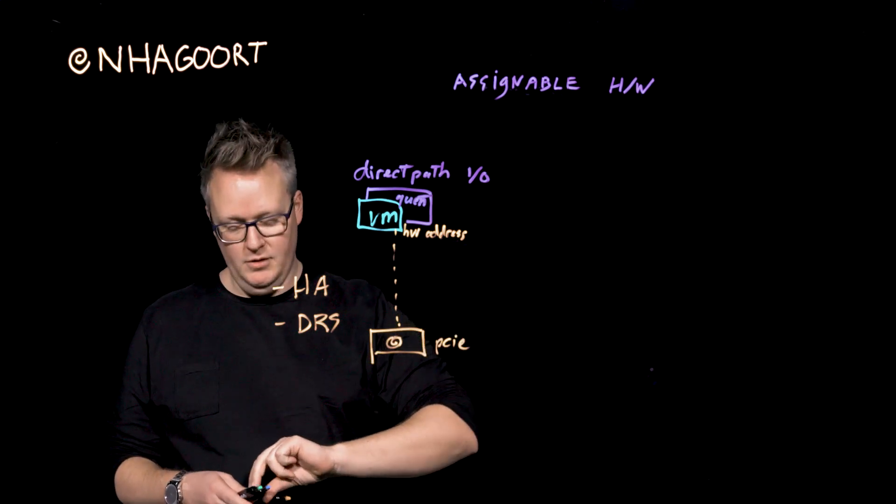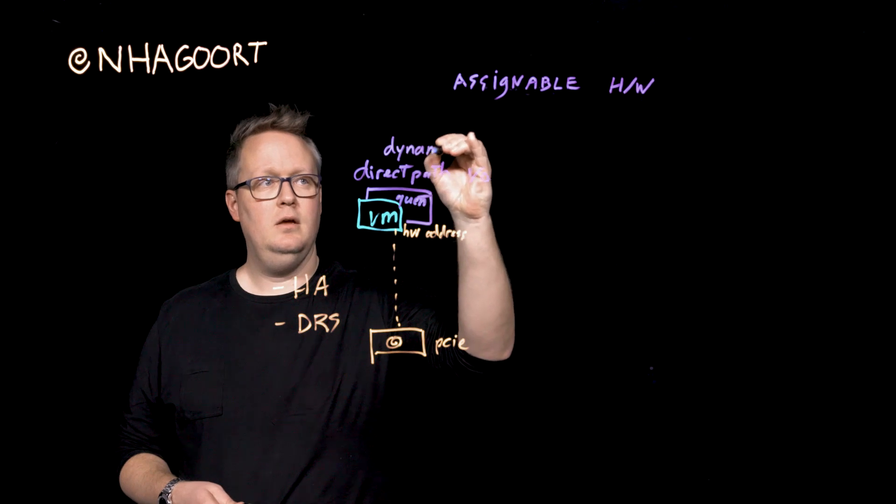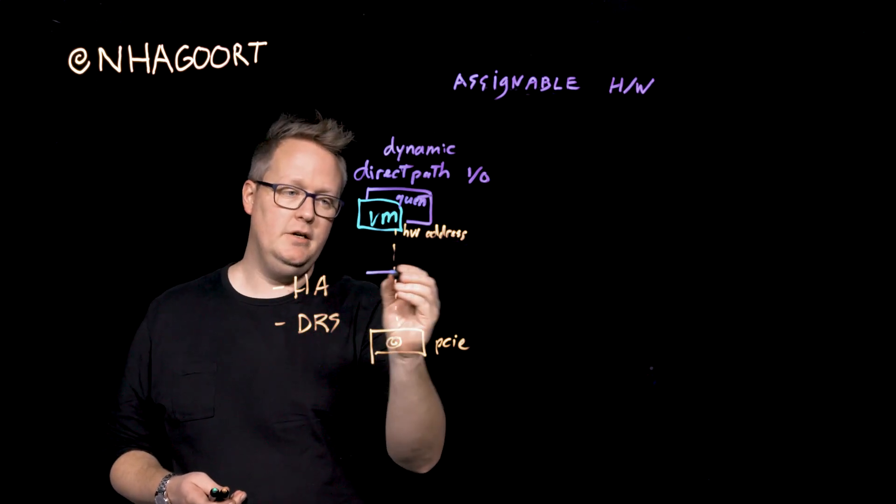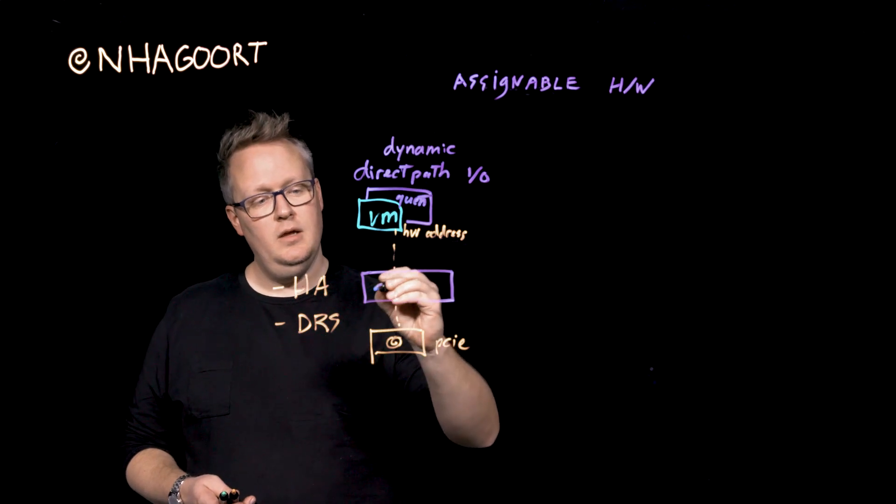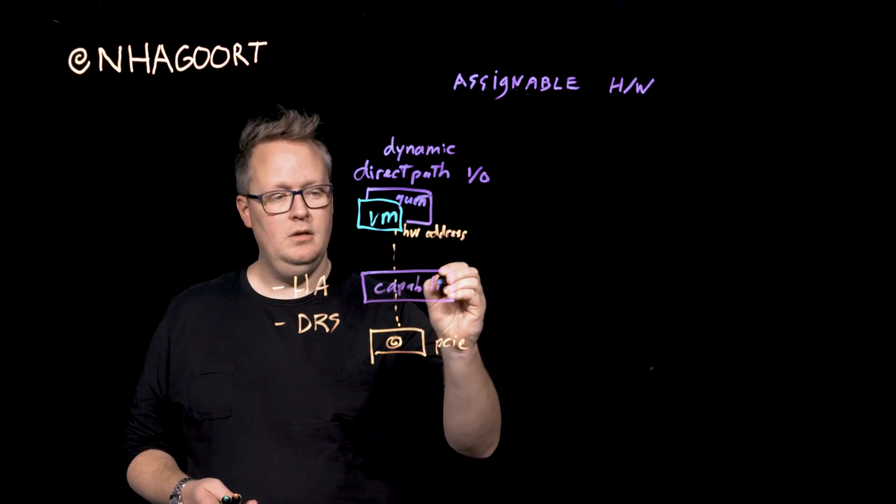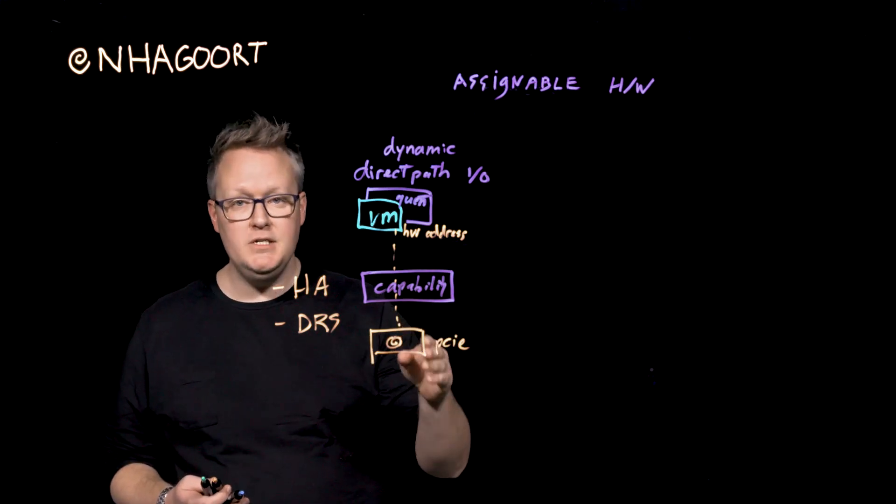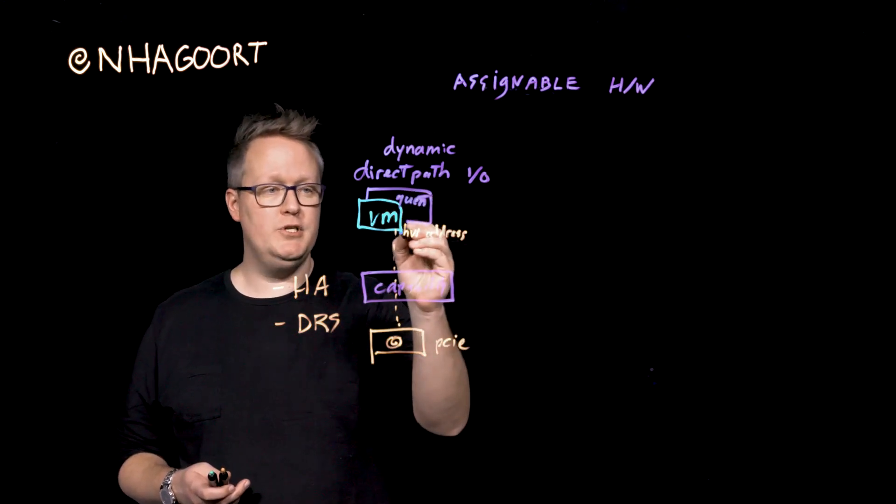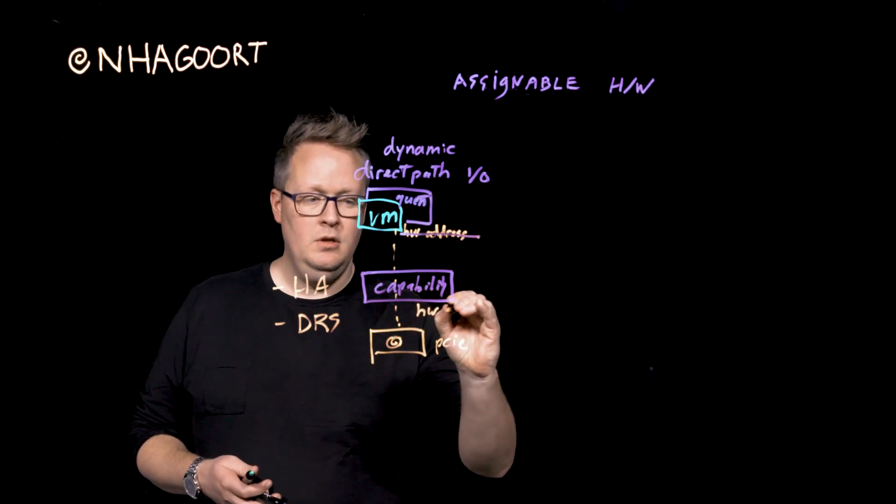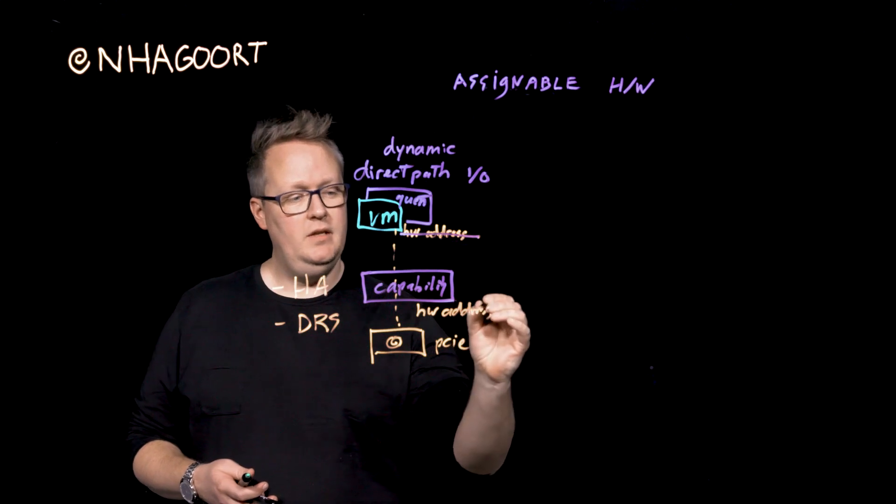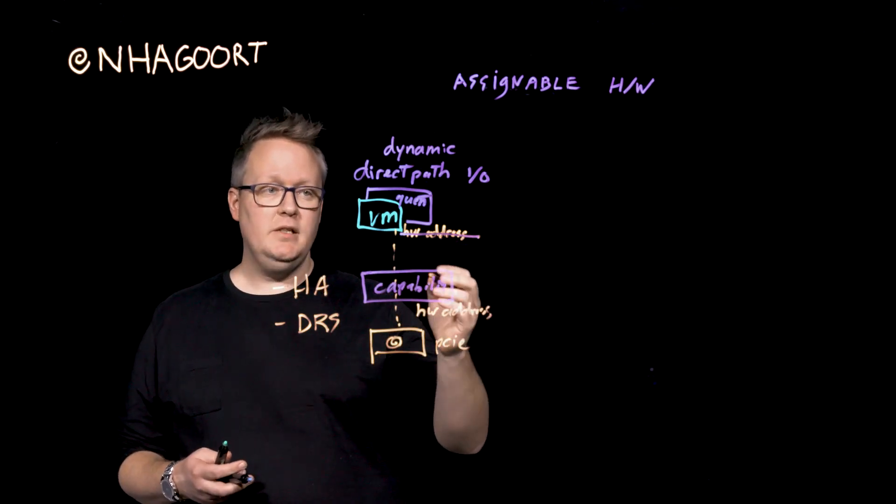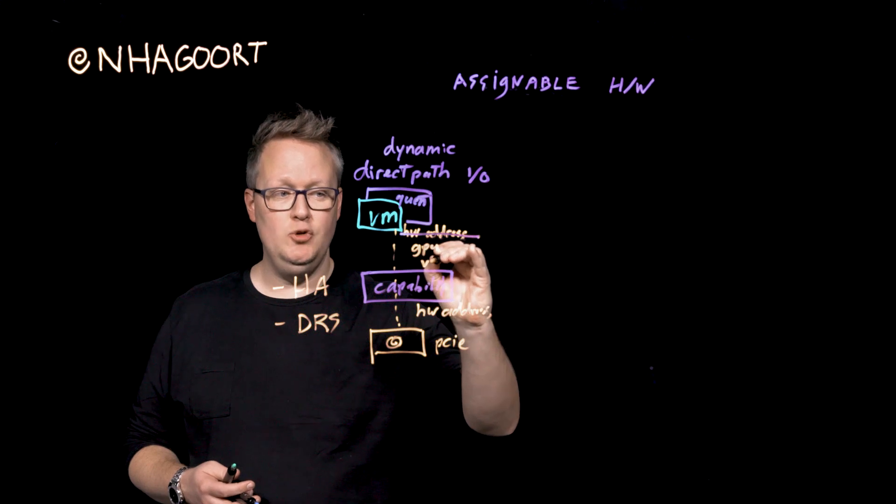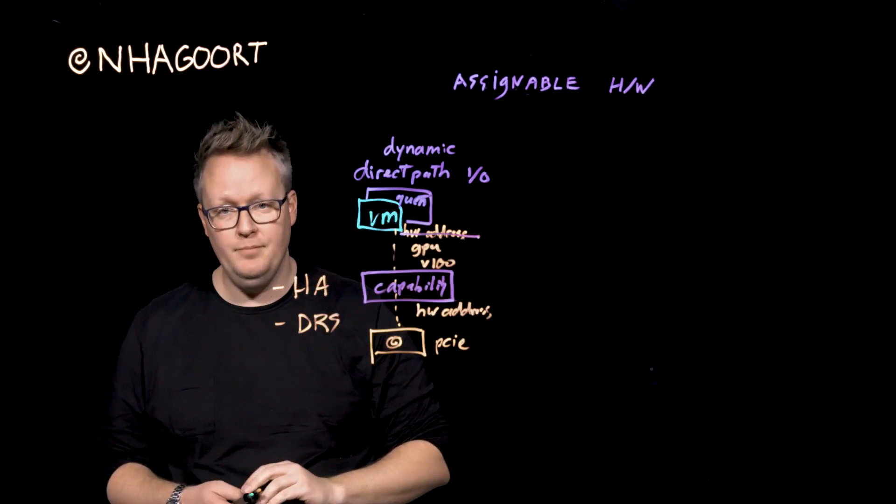With assignable hardware in vSphere 7, we are introducing dynamic direct path I/O. What this is, is basically a layer in between, which is all about the capability of a specific PCIe device. So now, rather than having that hardware address set up directly in the virtual machine, we are now doing that in the capability mapping layer. So basically, we'll expose to the virtual machine that we need a GPU, and we need a GPU model of that, for instance, an NVIDIA V100 Tesla.